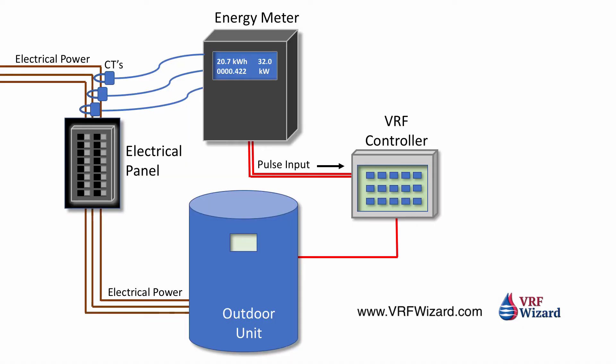This is about sub-metering for charging your tenants. If you have multiple tenants all served off one VRF outdoor unit, how can you charge them for the power used by that outdoor unit? You need some way to allocate costs — it could be anywhere from two to sixteen tenants attached to one outdoor unit. So how do you charge them for their share of that outdoor unit's energy consumption?